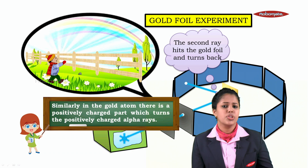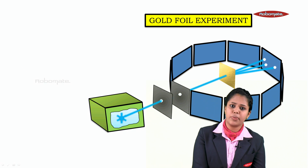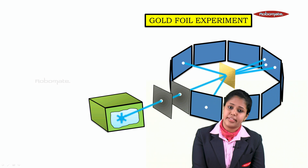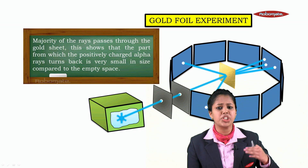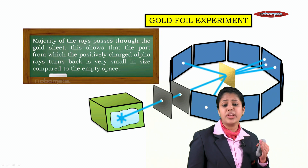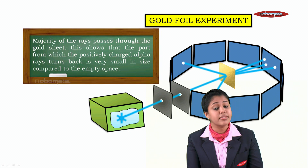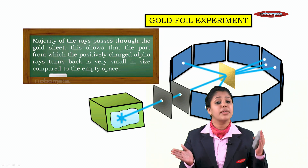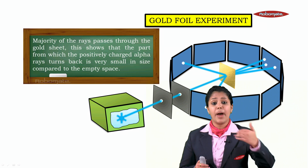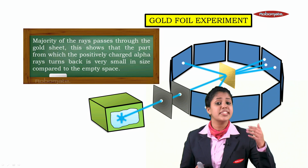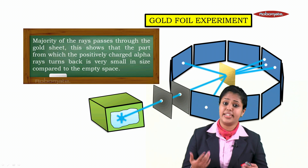In the whole experiment: the first ray passes through, the second and third rays also pass through, and some rays turn back. Majority of rays pass through the gold sheet. This shows that the part which turns the positively charged alpha rays back is very small in size compared to the empty space. There is a lot of empty space in the atom. Only a few rays turn back because there is some positive charge inside — positive-positive repulsion.